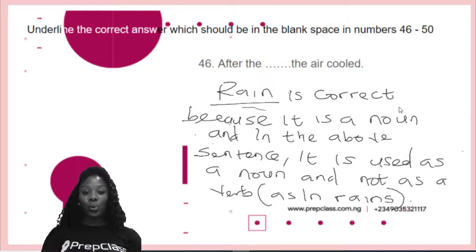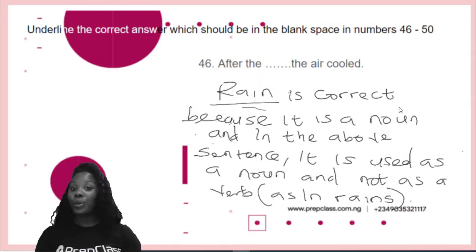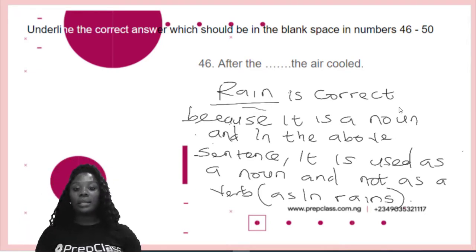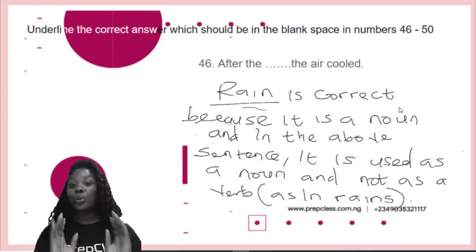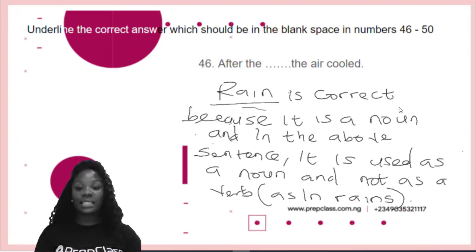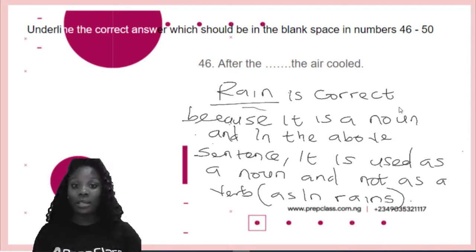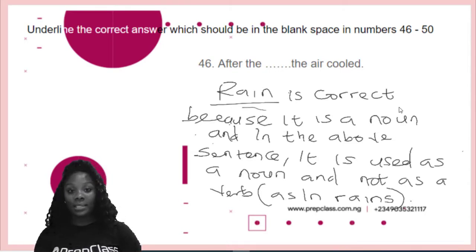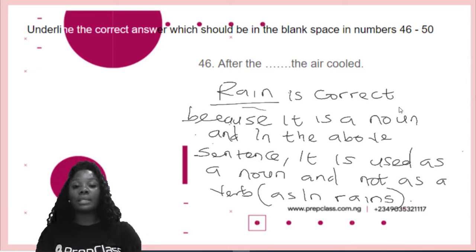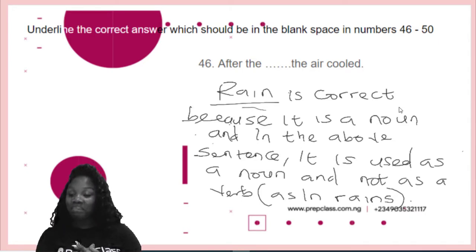After the dash, the air cooled — after the rain. Rain is the correct answer, and I know you're asking me why. It's because in this sentence, it is functioning as a noun and not as a verb. Rain — that is R-A-I-N, without an S — functions as a noun in sentences, while rains — that is the one with an S — functions as a verb in sentences.